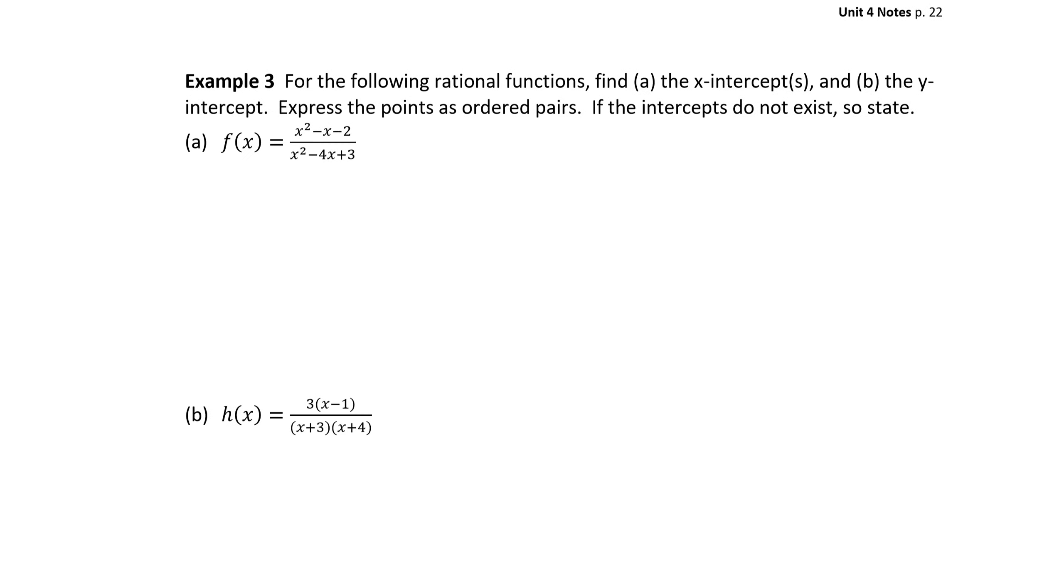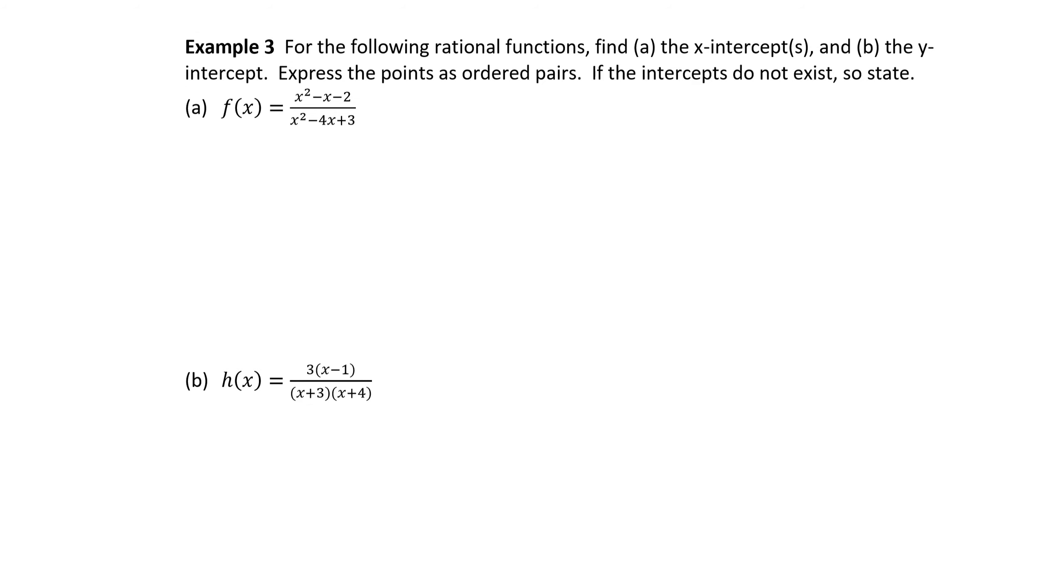Example 3: for the following rational functions, find the x intercepts and the y intercepts. We will express the points as ordered pairs or state the case if the intercepts do not exist. Let's start on example A with the x intercept. To find the x intercept, we're going to set y equal to 0, or we set the function equal to 0.